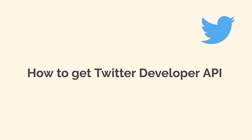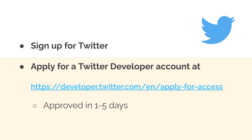So let's talk about how we can actually get access to the Twitter Developer API. First, you have to have a Twitter account — you can use your existing account or create a brand new one. Then you have to apply for a Twitter Developer account, which will link your Twitter account with the Twitter Developer site. You have to write a small application explaining what you're using the Twitter API for, just a few sentences. Typically you'll be approved within 24 hours, but it can take up to five days. Just go to developers.twitter.com and hit "Apply for Access" to submit your application.